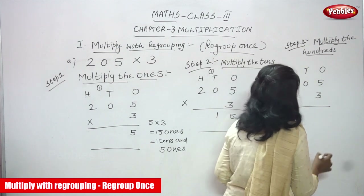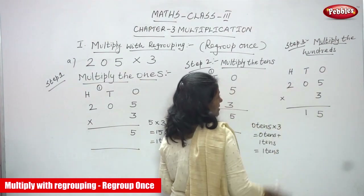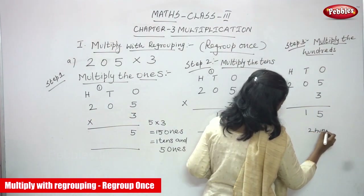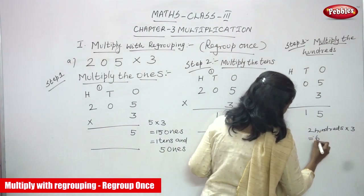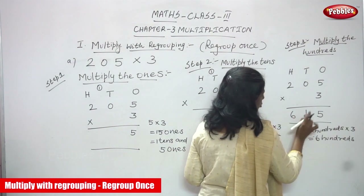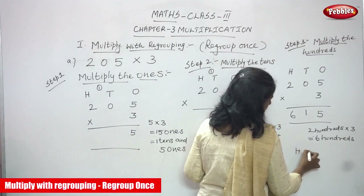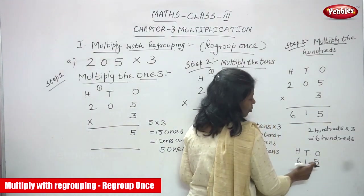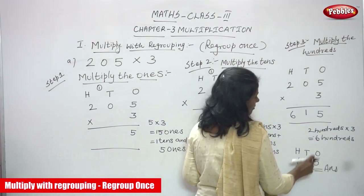Step three: multiply the hundreds. Write the ones and tens answers as they are — five ones and one ten. The number in the hundreds place is two. Two hundreds multiplied by three gives six hundreds. There is no carry over, so write 6. The answer is 615 — six hundreds, one ten, and five ones.